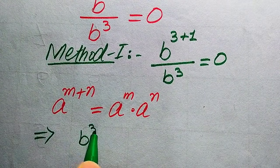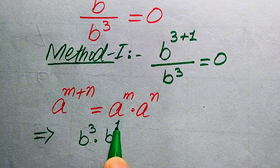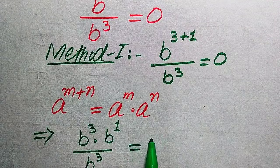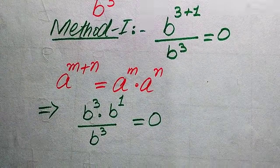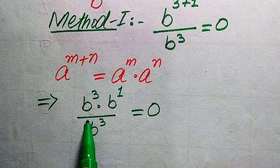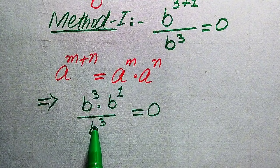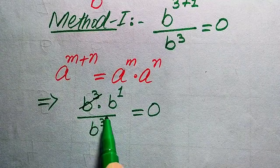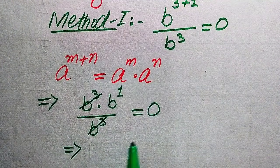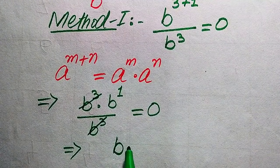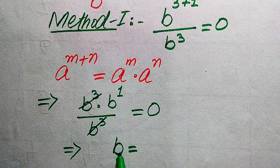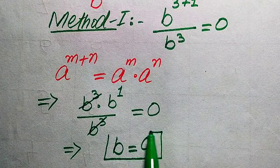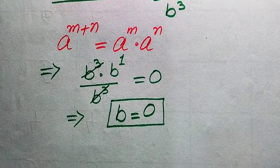Applying this rule, we rewrite the numerator as b to the power of 3 multiplied by b to the power of 1, divided by b cubed, all equal to 0. You can see that b cubed appears in both the numerator and denominator, so we cancel those two terms. After cancellation, we get b to the power of 1, or simply b equals 0. This is the only root found in the first method.